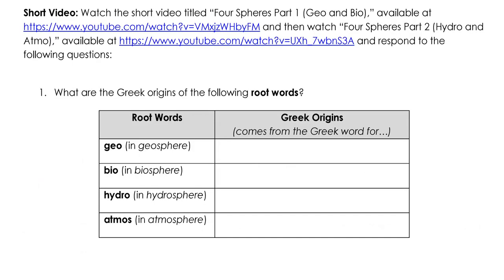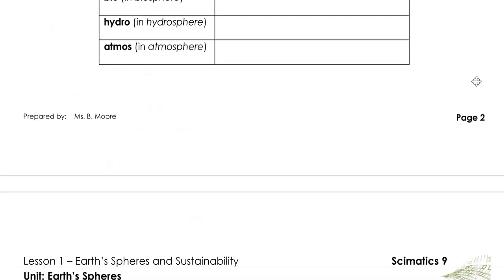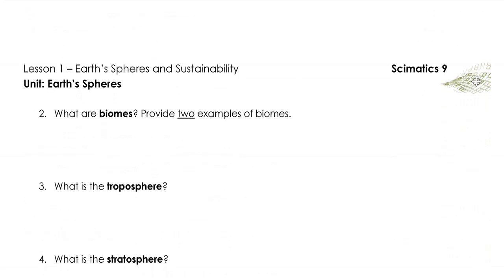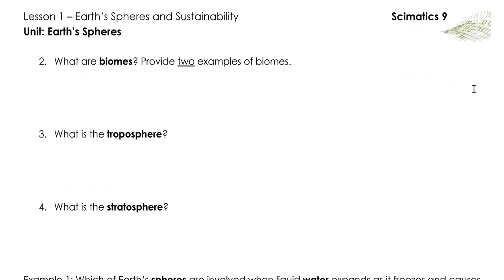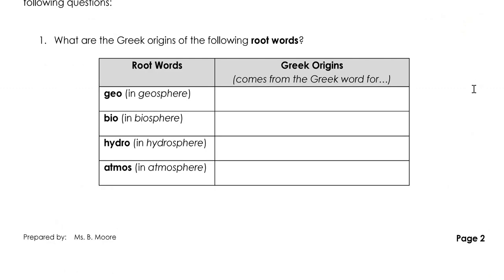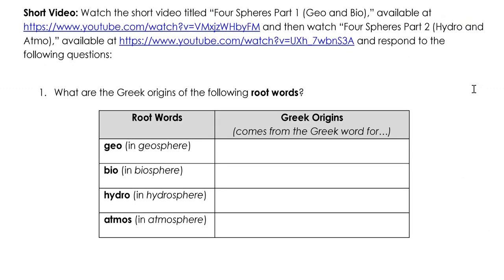We're now going to watch two short videos on YouTube. The first is called Four Spheres Part 1 and the second is called Four Spheres Part 2. While we watch, we're aiming to answer the following questions: What are the Greek origins of the root words geo, bio, hydro, and atmos? What are biomes, and provide two examples. What is the troposphere? And what is the stratosphere? Please pause this video here while you go to YouTube and watch these short clips.